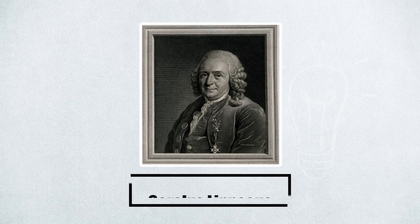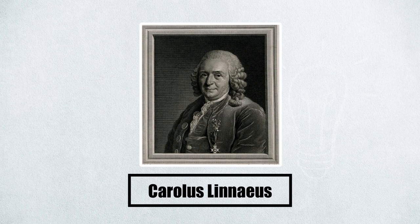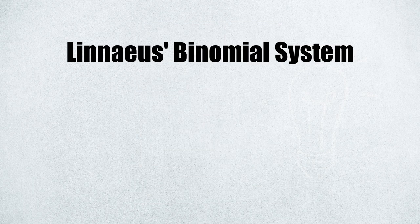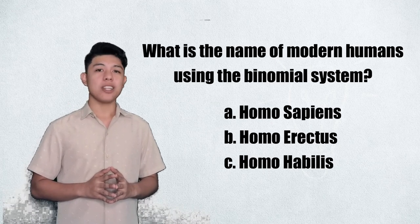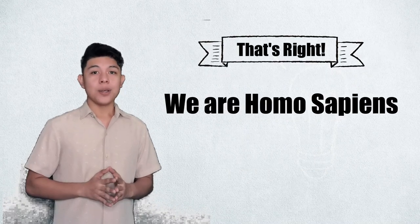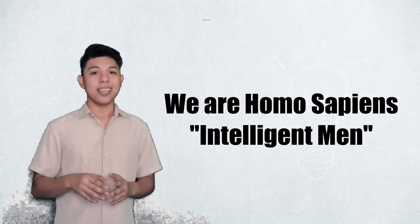In the past, lots of people were trying to figure out how to classify living things. But thanks to Carolus Linnaeus' binomial system, the struggle is over. Using the Linnaeus system, which biologists still use today, the first name or genus represents a more general category, and the second name or species is based on specific characteristics. For example, modern humans are called Homo sapiens, which also means intelligent men.